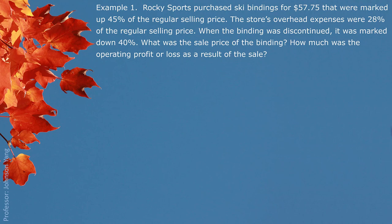Example 1. Rocky Sports purchased ski bindings for $57.75, marked up 45% of the regular selling price. The store's overhead expenses were 28% of the regular selling price. When the binding was discontinued, it was marked down 40%. What was the sale price of the binding? From the question: cost of buying C = $57.75, markup M = 0.45S, expenses E = 0.28S.